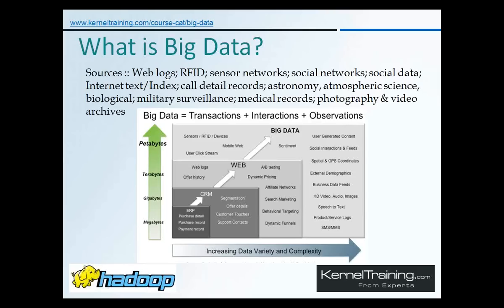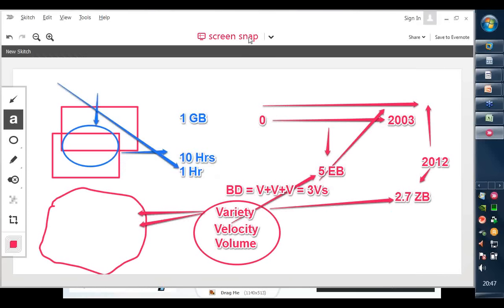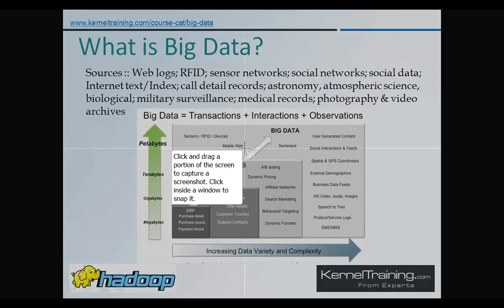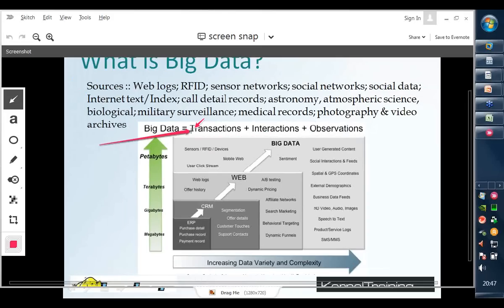Let's move on. Big data is a combination of transactions, interactions, and observations. Transactions are things inside your database — what you save, update, delete. Interactions are what you write on Facebook, Twitter — you're interacting with friends and relatives. Observations are your log files and other sources of information — your application logs, server logs — those are referred to as observations.